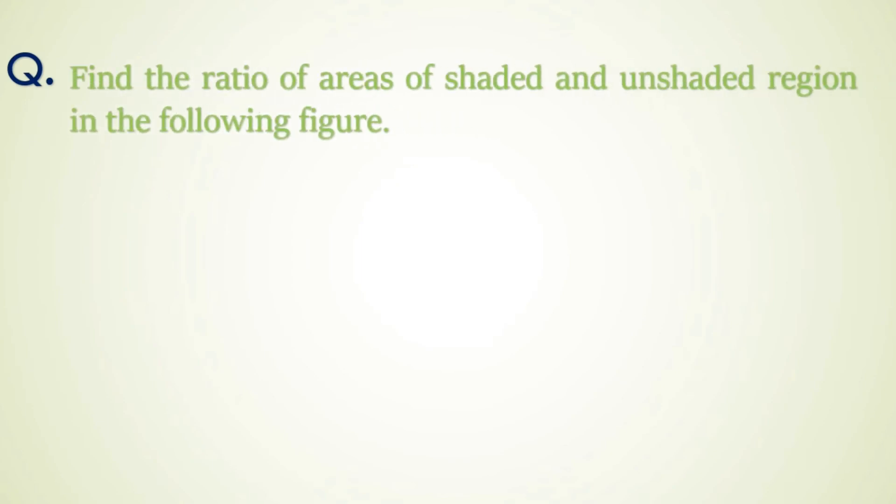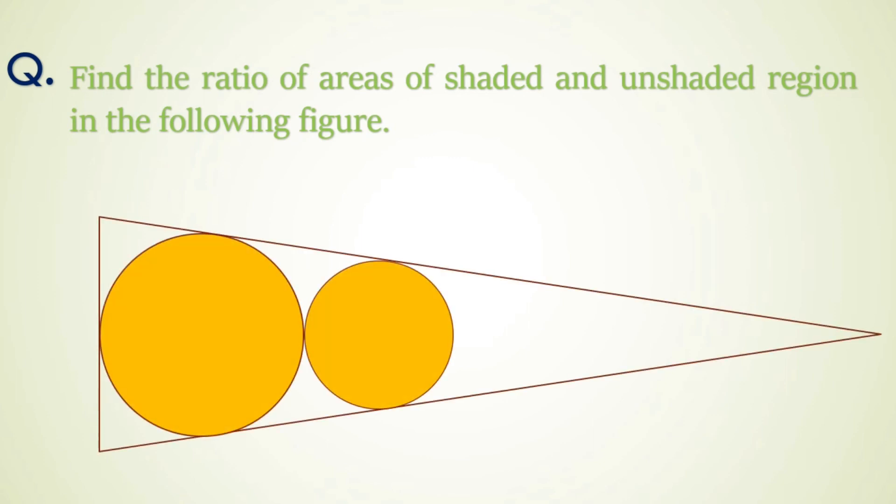Let's move towards another question. Find the ratio of areas of shaded and unshaded region in the following figure. Here we have an isosceles triangle and a circle is inscribed in it which is touching all three sides of the triangle, and another circle is drawn touching the two sides of the triangle and previous circle. Similarly many circles are drawn up to infinite. Equal angles of the triangle are given as theta. Circles are shaded here and all other area is unshaded. We have to find the ratio of areas of shaded and unshaded region.